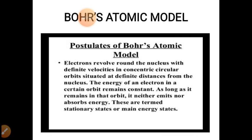Let us look into the postulates of Bohr's atomic model. Electrons revolve around the nucleus with definite velocities in concentric circular orbits situated at definite distances from the nucleus. The energy of an electron in a certain orbit remains constant as long as it remains in that orbit. It neither emits nor absorbs energy. These are termed stationary states or main energy states.